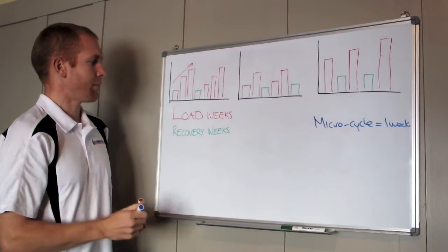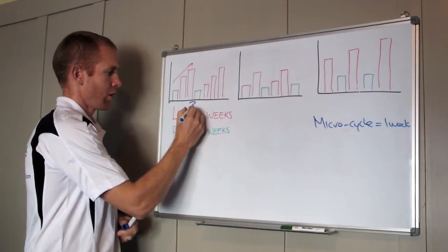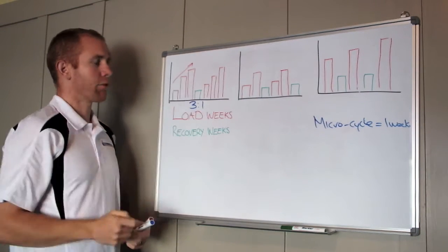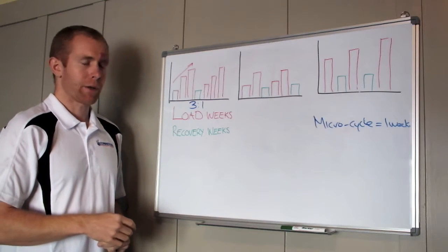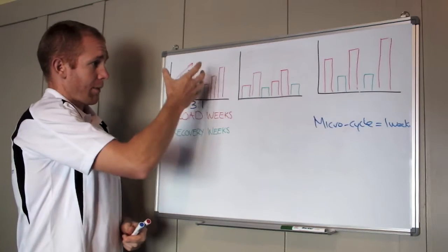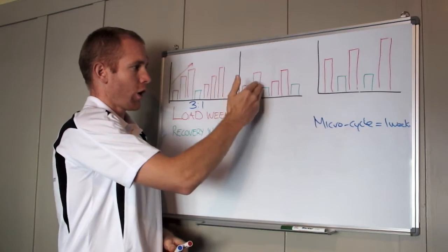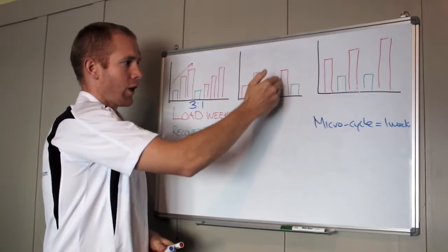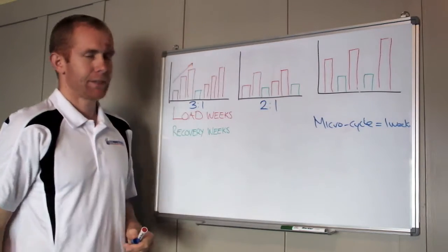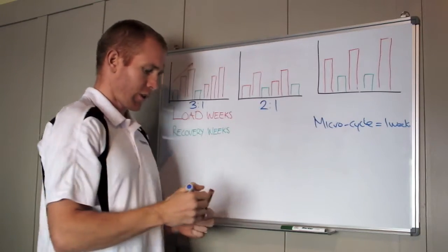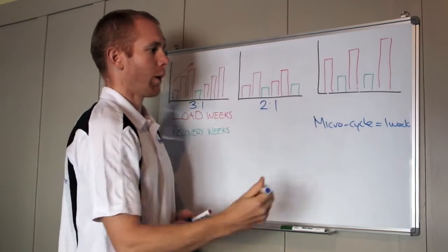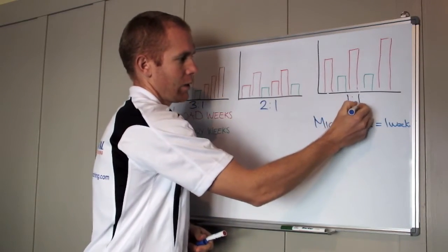So looking at this first example here, this is our traditional three to one work to recovery periodization plan, and you just keep repeating that. Over here we've got two load weeks, one recovery, two load weeks, one recovery, so this is our traditional two to one. And then finally over on the side here, we've got one load week, one recovery, one load, one recovery, one load, one recovery. So this is our one to one.